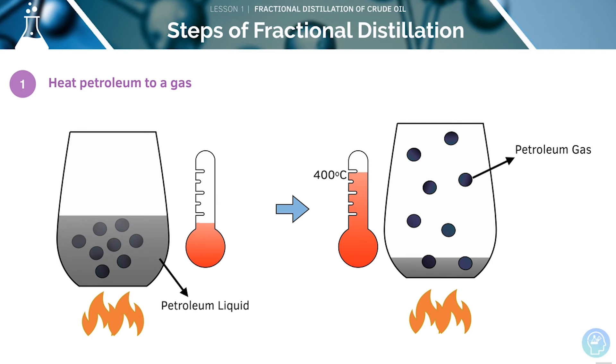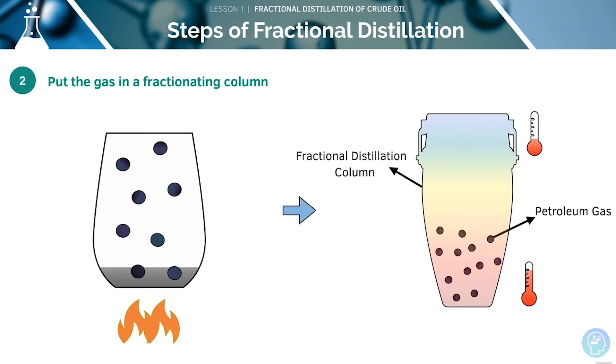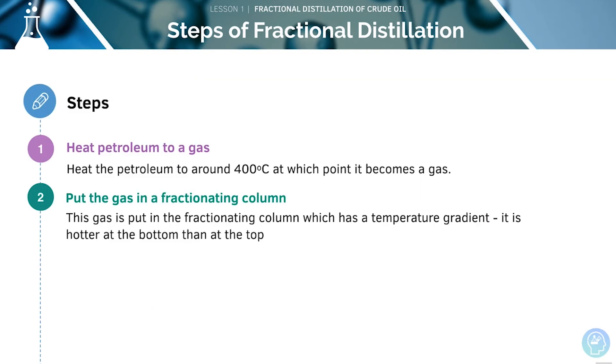First, we heat the petroleum to around 400 degrees. At this point, it becomes a gas. This gas is put into the fractionating column, which has a temperature gradient. It's hotter at the bottom than at the top of the column.